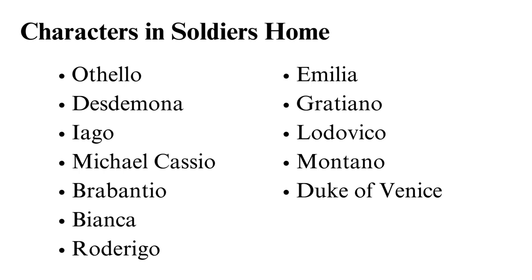Iago is Othello's jealous ensign, a standard bearer. He is the villain and is 28 years old in the play. He is obsessive, manipulative, and jealous. He is seen as the worst villain since his motives are not concrete. At one point he claims to seek revenge because Othello did not promote him, but in another instance he claims to be doing so because he suspects that Othello slept with his wife Emilia.